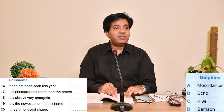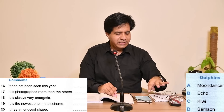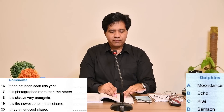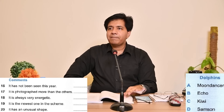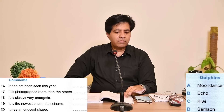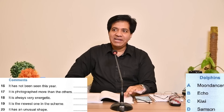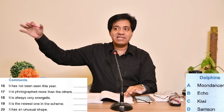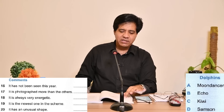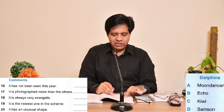Question number 18: always very energetic. For energetic they might use any other word. They all have their own personalities — Moon Dancer is very elegant and curves in and out of the water very smoothly, whereas Samson has a lot of energy; he's always leaping out of the water with great vigor. Leaping out of water with vigor, has a lot of energy — Samson, D, is the right answer.